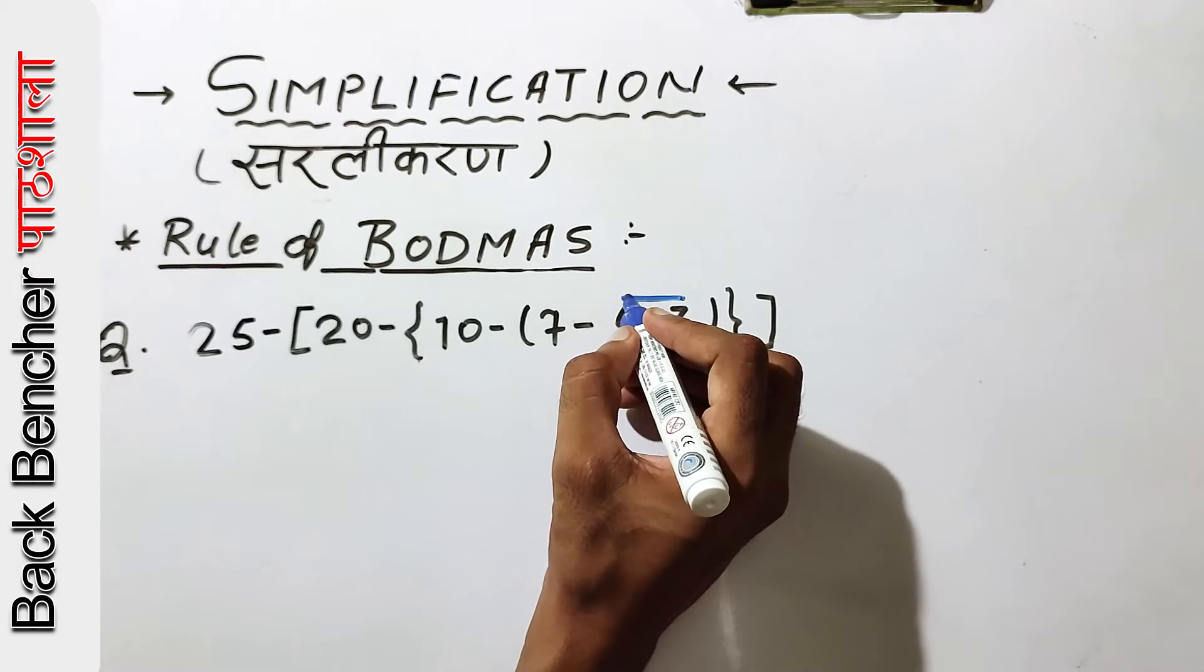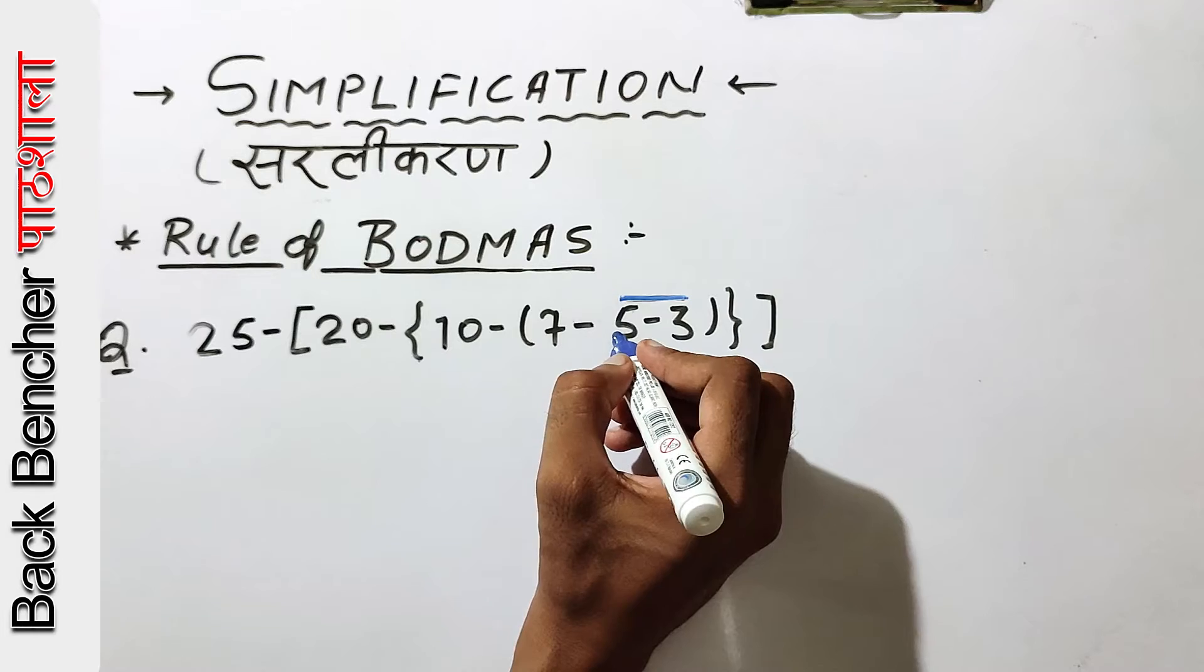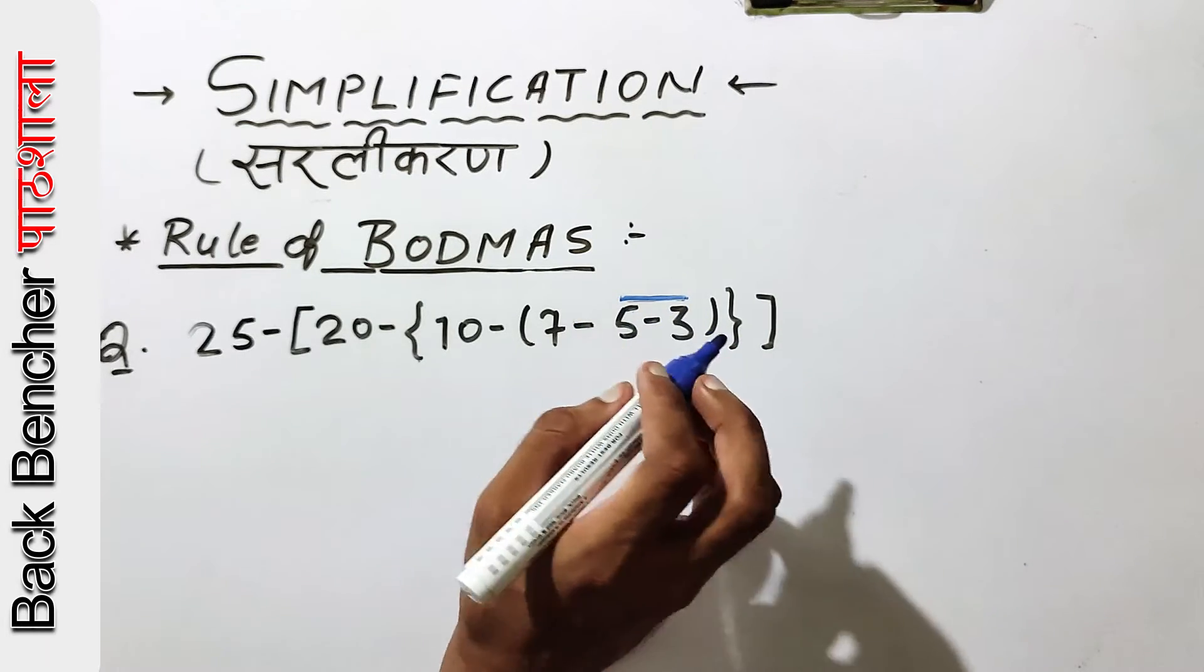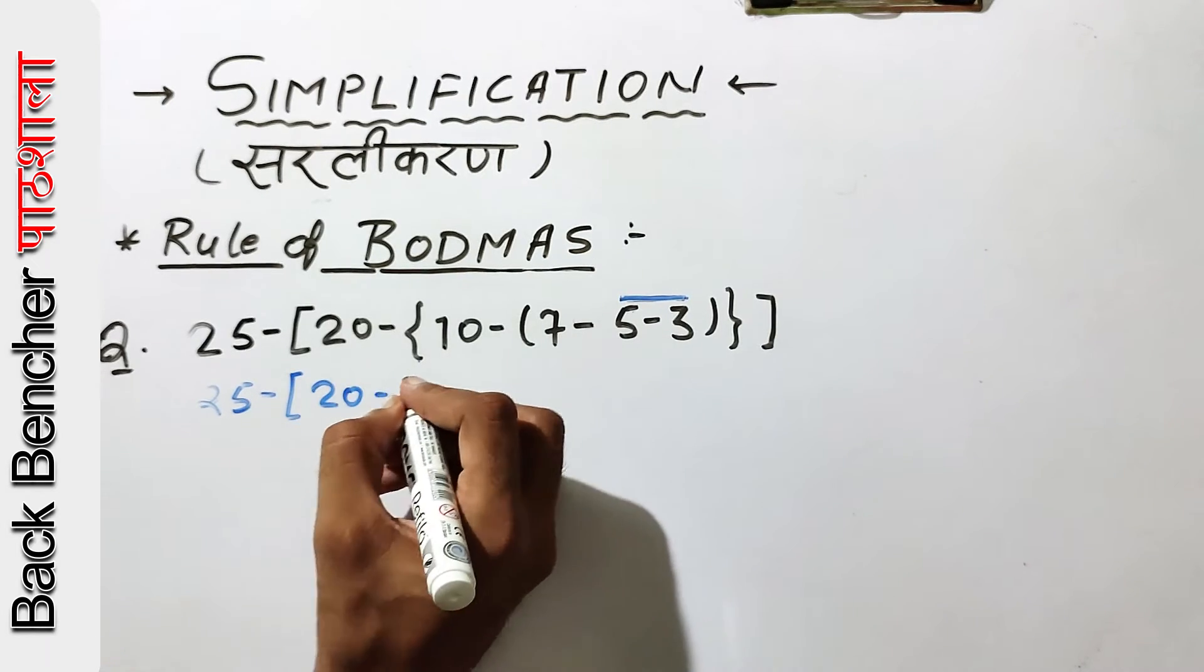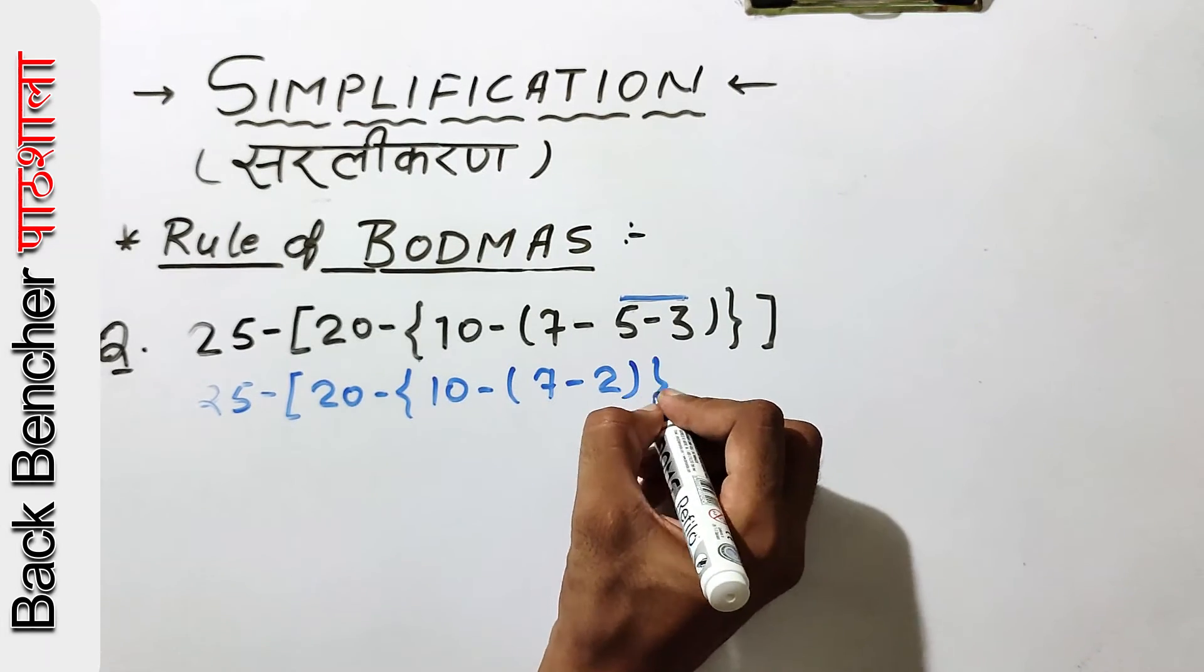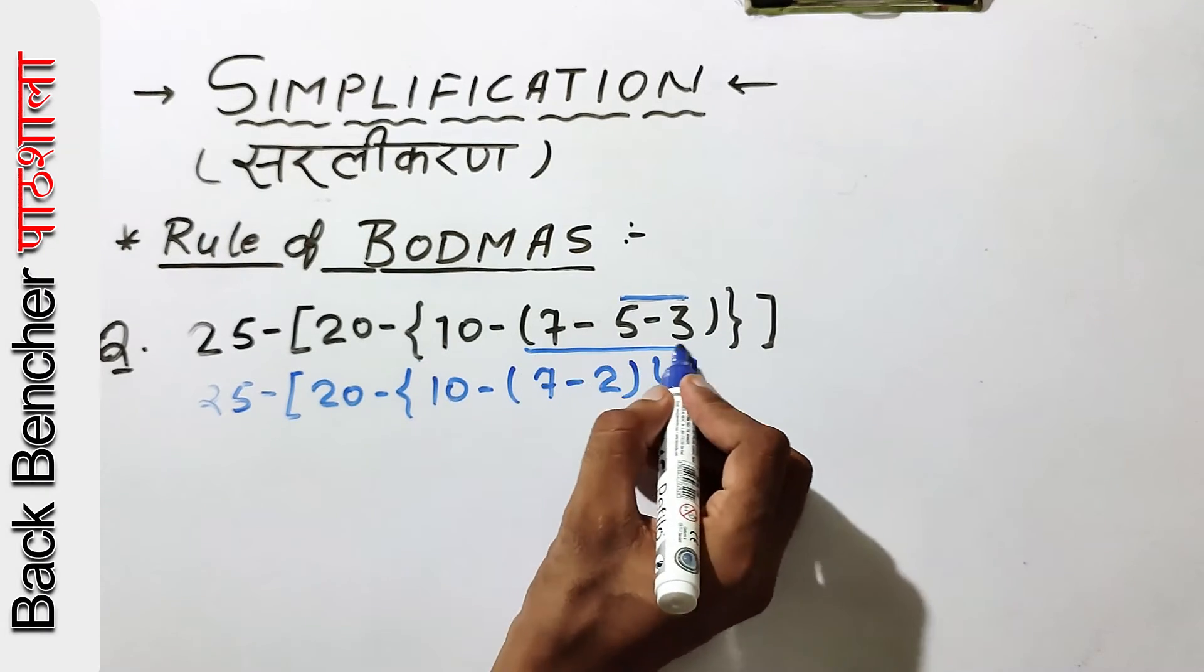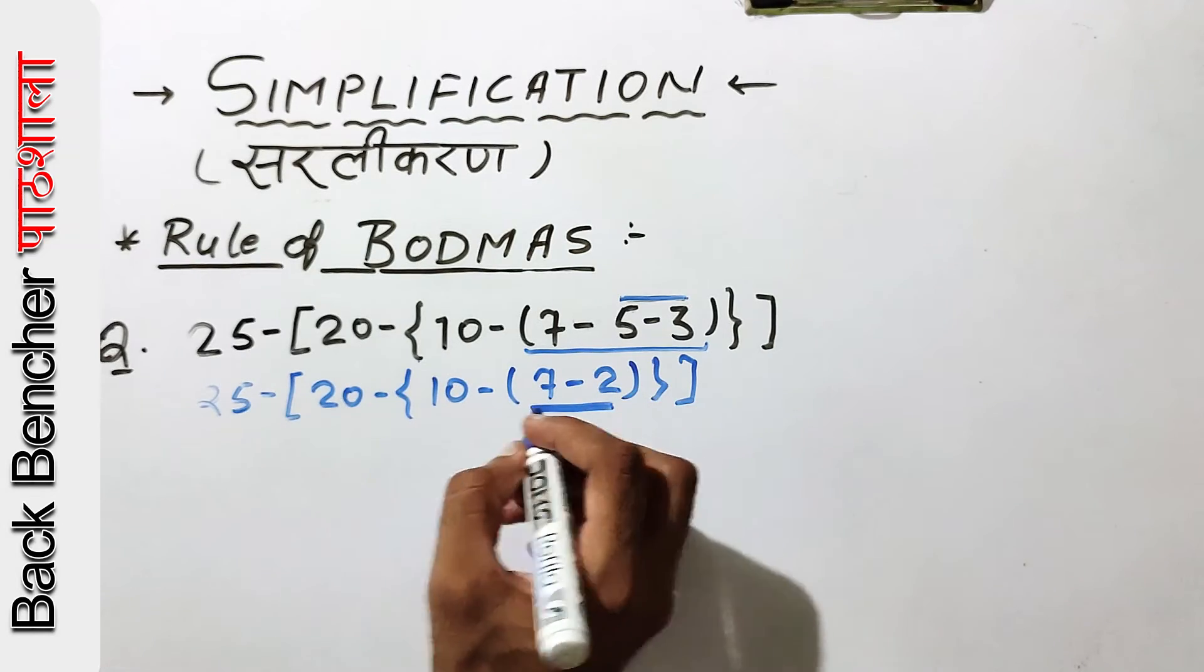First we will solve the smallest bracket. If we have plus and minus, we will solve this bracket first. So it will be 25 minus 20 minus 10 minus, this is 2 times 5. Now, if this is solved, this will be 5.